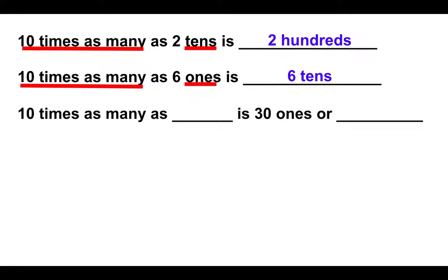Here's another problem. Now, it says ten times as many as what is thirty ones. So you need to think to yourself, ten times as many as what gets me to thirty. Well hopefully you realize, ten times as many to get to thirty, that's just ten groups of three ones. And we also know that you can show thirty ones as three tens.